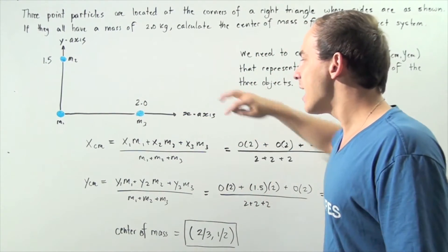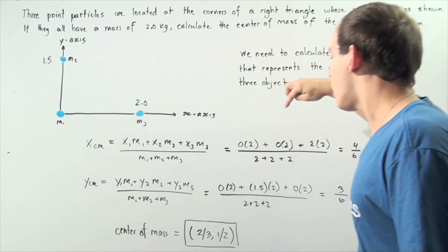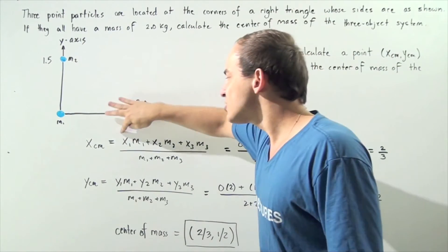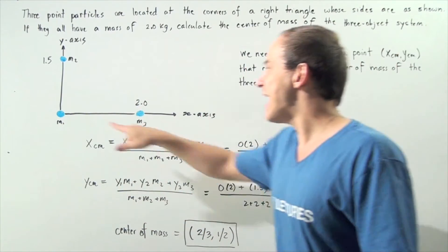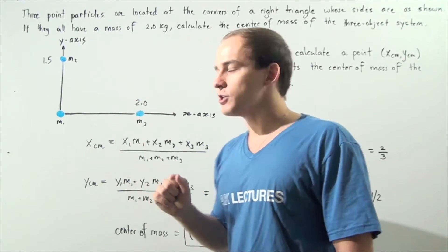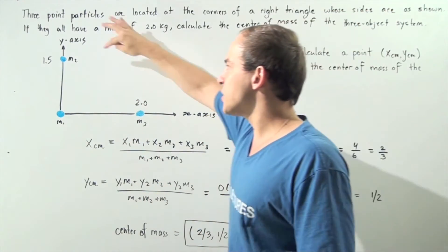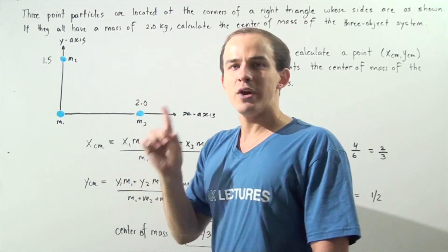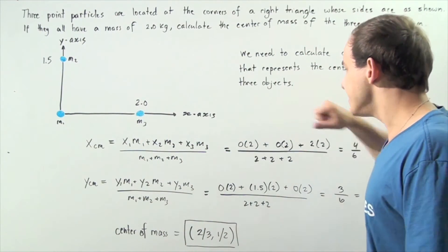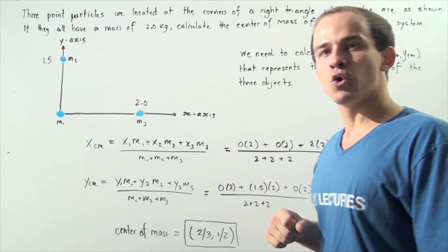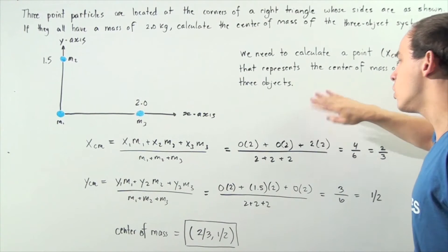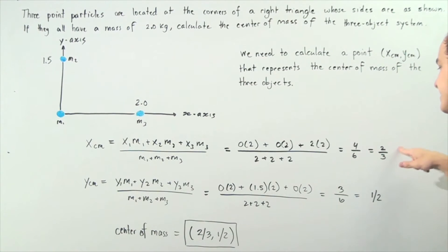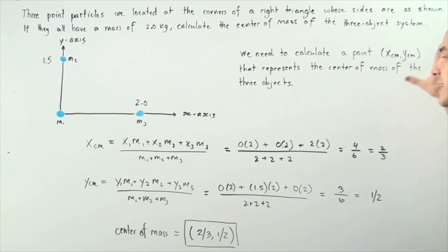The denominator becomes 2 plus 2 plus 2, which is 6. For the numerator: M1, M2, and M3 are all 2. X1 is the X coordinate of point 1, which is 0 because M1 is at the origin. X2 is also 0 because the X coordinate of M2 is also 0. X3 has an X coordinate of 2. So we have 0 plus 0 plus 2 times 2, which is 4. Therefore, 4 divided by 6 is 2/3 — this is the X coordinate of the center of mass.